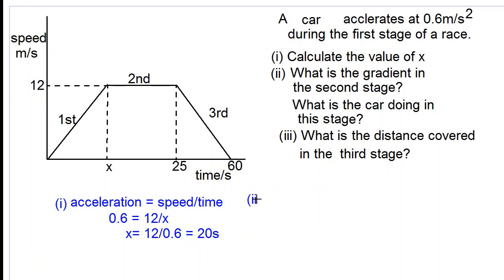Let's move on to part two. What is the gradient in the second stage? The gradient is 0. As you can see there's a plateau here, so the horizontal line has a gradient of 0.